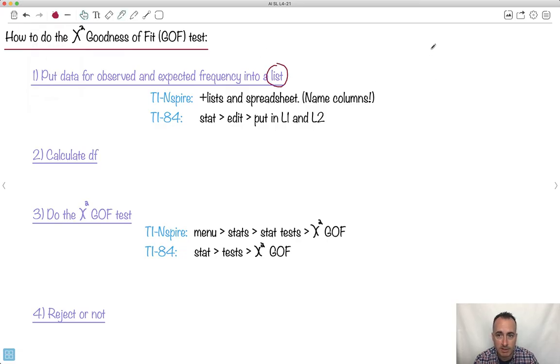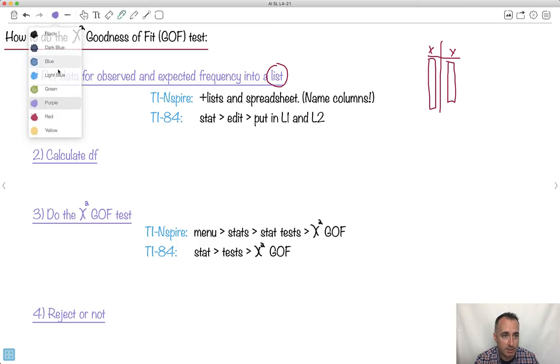You're going to have two different lists. You somehow have to get them into your calculator. On the Inspire, you go Lists and name your columns. On TI-84, you go Stats, Edit, and put in L1 and L2. Then you calculate your degrees of freedom. In this case, df equals n minus 1. Then we do this Chi-Squared Goodness of Fit test. Once you put them in the lists, we go Menu, Stats, Test, Chi-Squared Goodness of Fit. Same thing with TI-84.